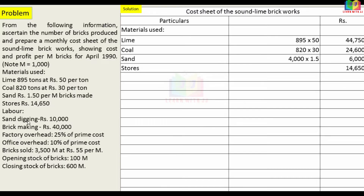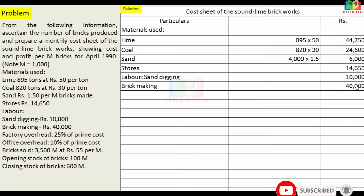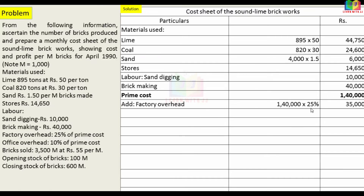Now building the cost sheet: Lime — 44,750; Coal — 24,600; Sand — 6,000; Stores — 14,650; Labor (sand digging) — 10,000; Labor (brick making) — 40,000. Total prime cost is 1,40,000. Factory overhead is 25% of prime cost: 25% of 1,40,000 = 35,000.